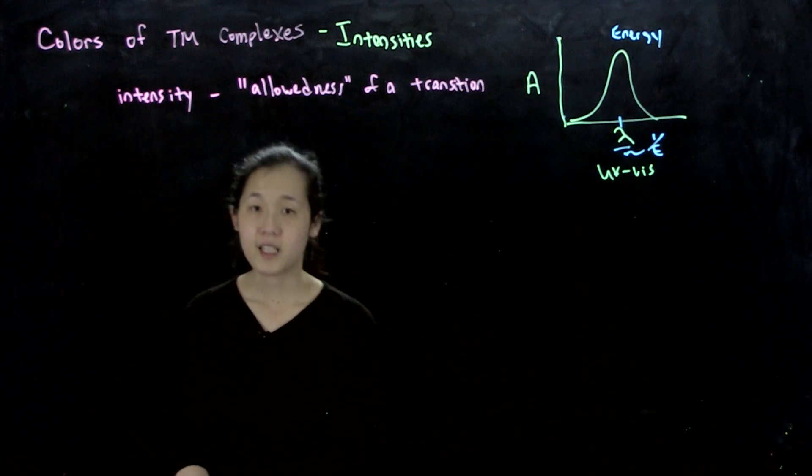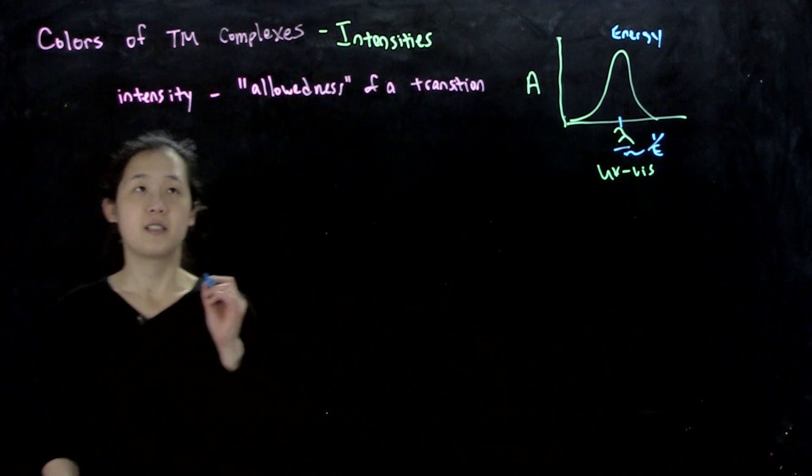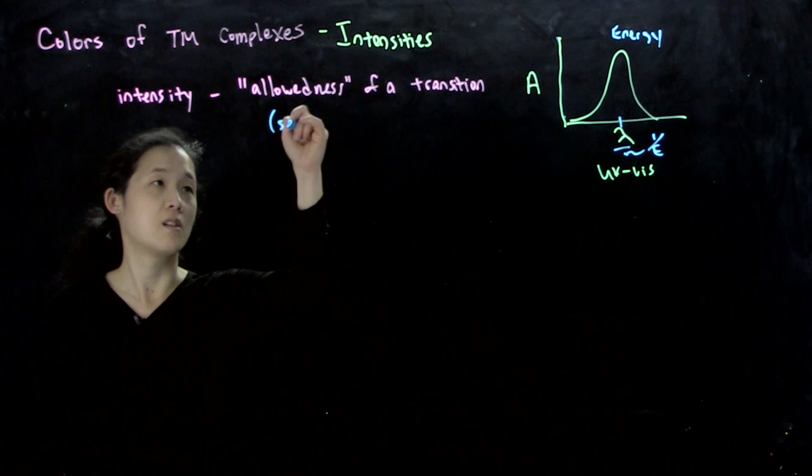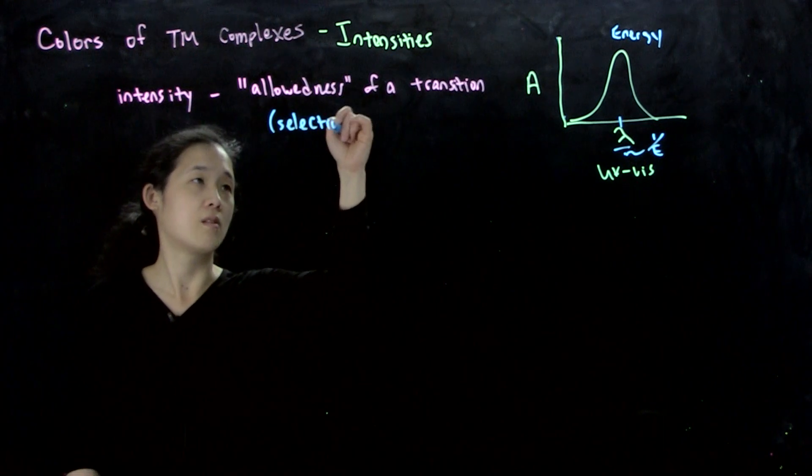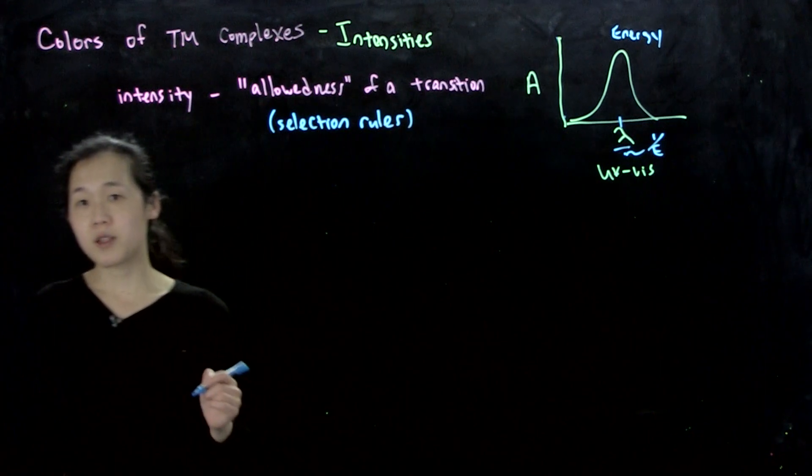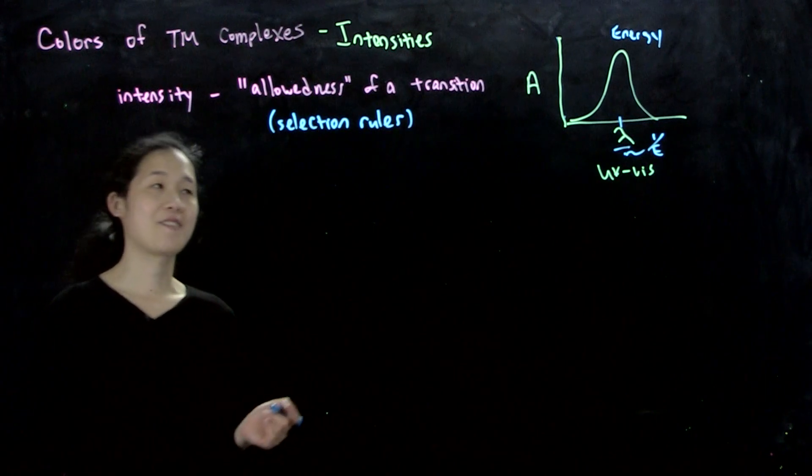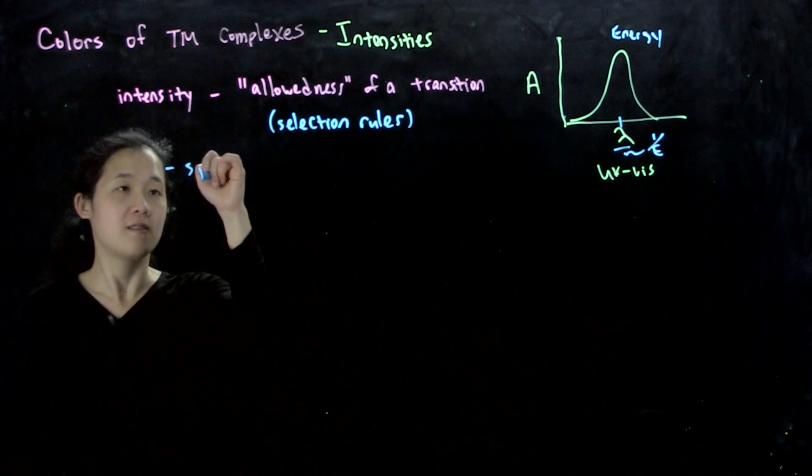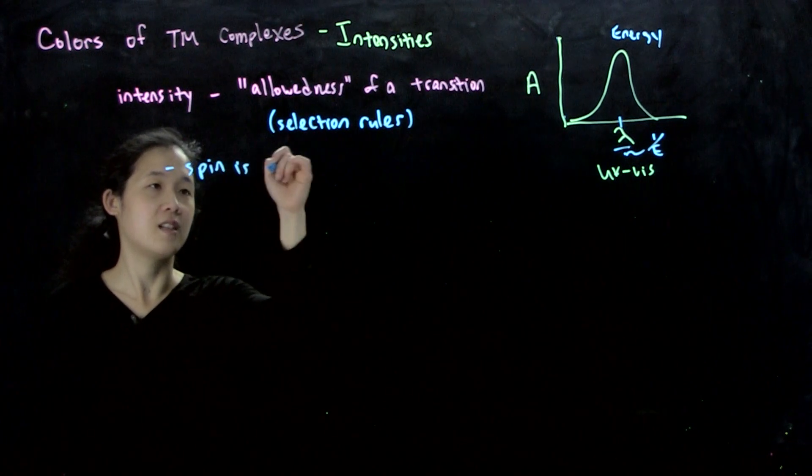So one thing that we should keep in mind is there are certain selection rules. This gives us selection rules. We'll talk more about that if you take advanced organic chemistry. But for now, one thing that we should keep in mind is spin is conserved.